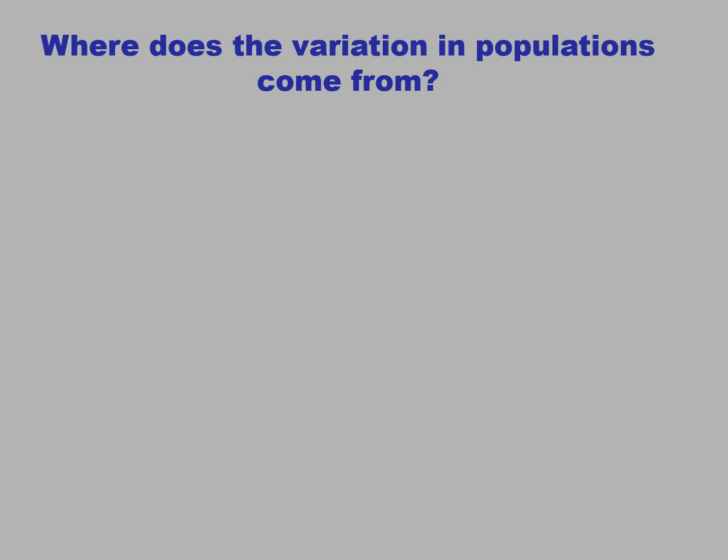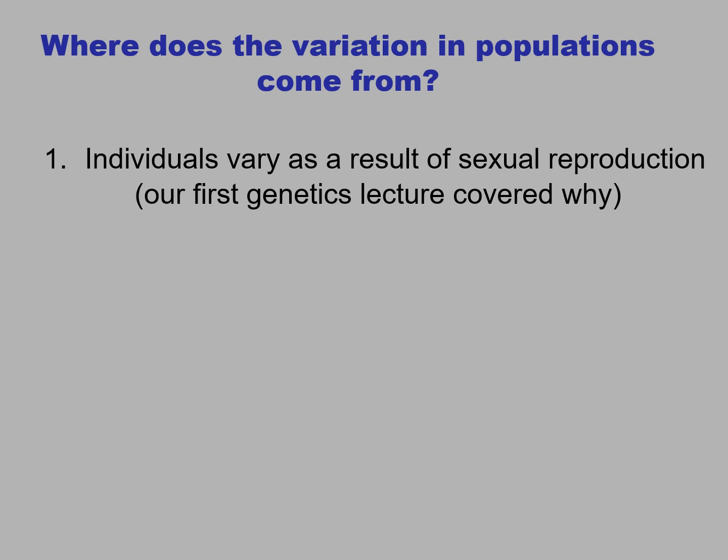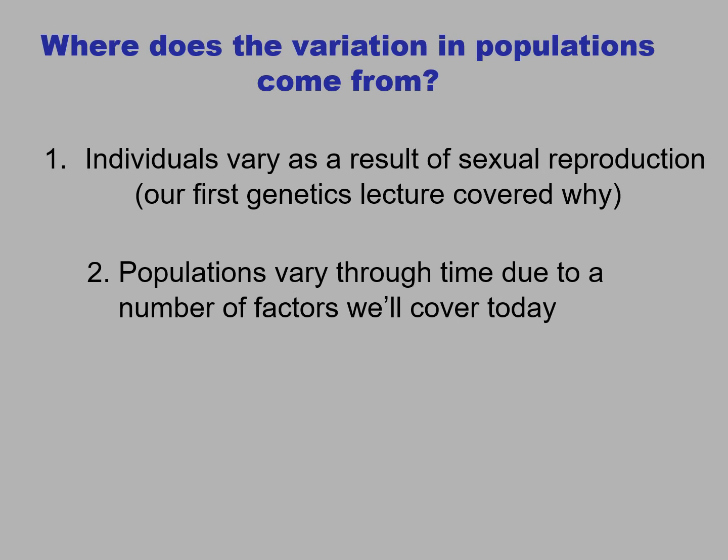Where does the variation in populations come from? Individuals vary as a result of sexual reproduction, and our first genetics lecture covered why. But populations vary through time due to a number of factors we'll cover today.